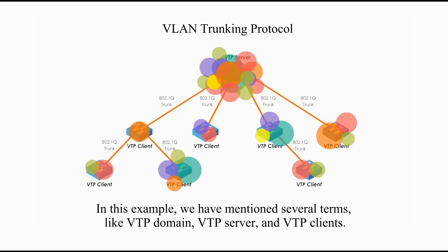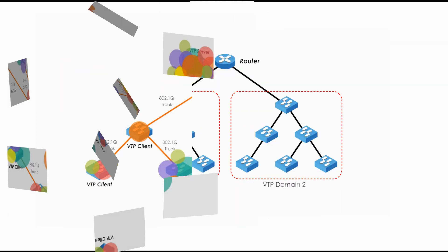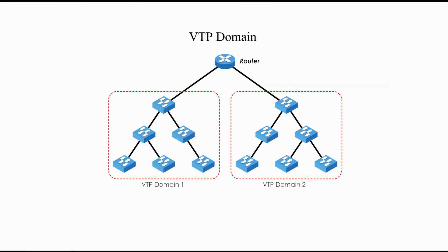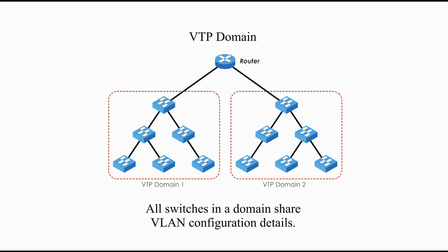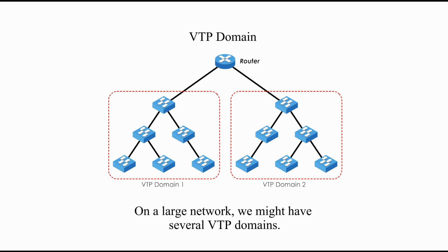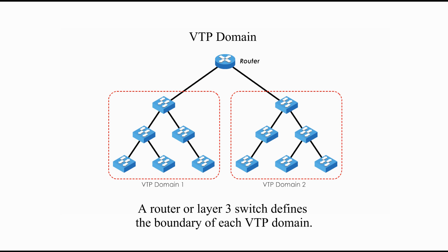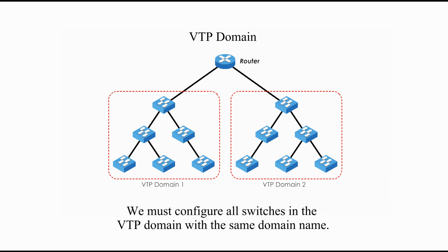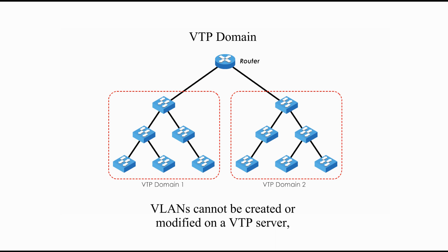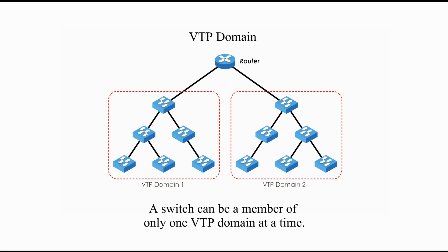We have mentioned several terms like VTP domain, VTP server, and VTP clients. Let's talk about them one by one. First, let's talk about VTP domain. A VTP domain consists of a group of interconnected switches. All switches in a domain share VLAN configuration details. On a large network, we might have several VTP domains. A router or a layer 3 switch defines the boundary of each VTP domain. When configuring VTP for the first time, we must always assign a domain name. We must configure all switches in the VTP domain with the same domain name. Until the VTP domain name is specified, VLANs cannot be created or modified on a VTP server, and VLAN configuration is not propagated over the network. A switch can be a member of only one VTP domain at a time.